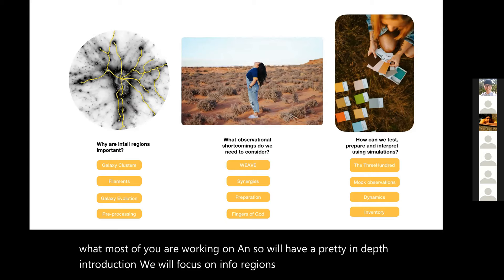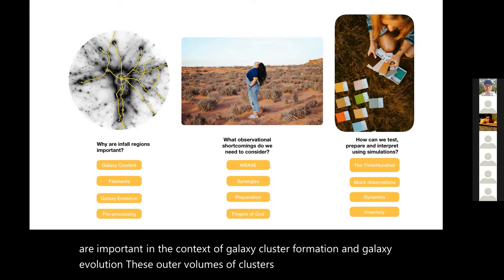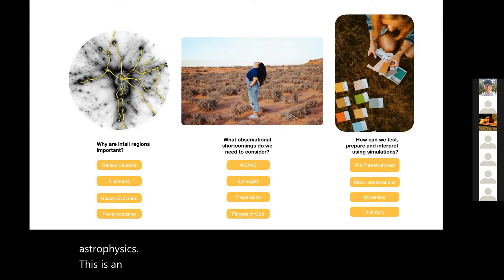I understand now from having met you that this is quite different to what most of you are working on, so we'll have a pretty in-depth introduction. We will focus on infall regions of galaxy clusters - they are important in the context of galaxy cluster formation and galaxy evolution. These outer volumes of clusters are described as the latest frontiers in cluster astrophysics. This is an area where decadal white papers call it the unexplored large volume. There are lots of studies with x-ray observations looking at the intra-cluster medium, Sunyaev-Zeldovich effects, weak lensing - very challenging measurements because of the low gas density.